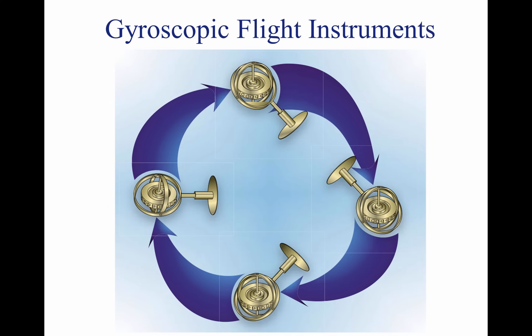A freely or universally mounted gyroscope is free to rotate in any direction about its center of gravity. Such a wheel is said to have three planes of freedom. Restricted or semi-rigidly mounted gyroscopes are those mounted so that one of the planes of freedom is held fixed in relation to the base. There are two fundamental properties of gyroscopic action: rigidity in space and precession. Rigidity in space refers to the principle that a gyroscope remains in a fixed position in the plane in which it is spinning.